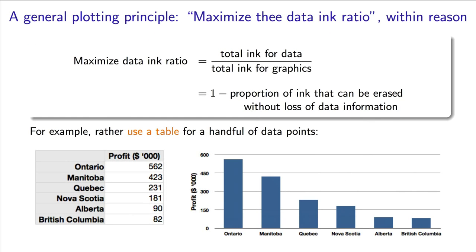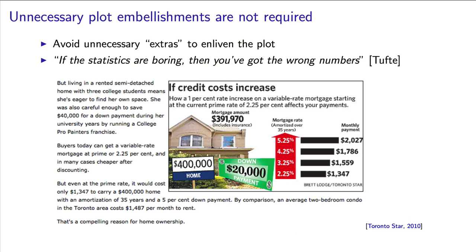This is the concept of data ink. The data ink ratio is the number of pixels used to represent actual data divided by the number of pixels used for the entire graphic. Another way to express the data ink ratio is 1 minus the proportion of ink that can be erased without losing any information. We should always aim to maximize this data ink ratio. This implies you should only use pixels to show data — don't add unnecessary graphics or embellishments to your plot that are unrelated to the data.